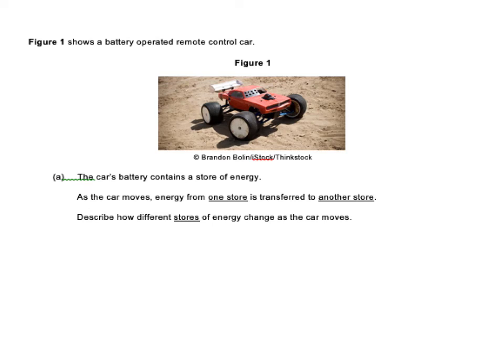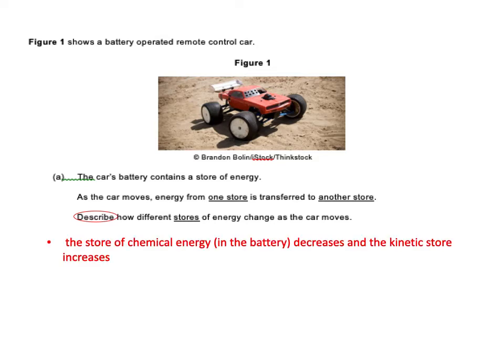So these are our longer answers. So you've got a car, and it says the car battery contains a store of energy. As the car moves, energy from one store is transferred to another store. So you've got to describe how different stores of energy change as the car moves. Now, on a longer question, I'd always start to look for these command words, the words that are telling you what to do. So I'm sure your science teachers are constantly reminding you about looking for those. So describe just means saying what's going on. You don't need to explain it. You just need to say what's happening. So first mark would be saying the store of chemical energy, which is obviously in the batteries, is decreasing. And this kinetic store is increasing as he's moving along. So the chemical one's going down and the kinetic one is increasing. The second mark, the internal energy of the surrounding air also increases. So you've got to make sure you talk about all the stores that are involved. So the chemical store and the battery, the kinetic store and the movement, and also the fact that it's going to get hot and the surrounding air will get warmer.